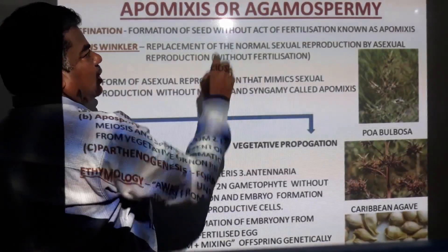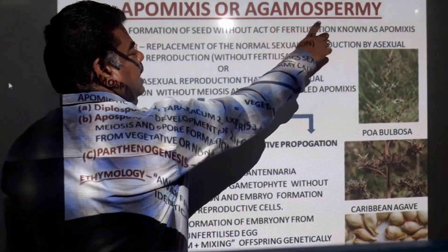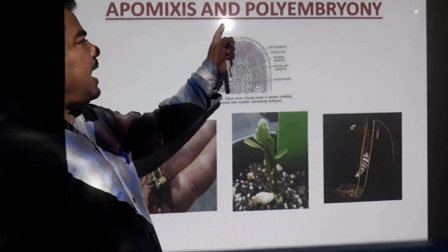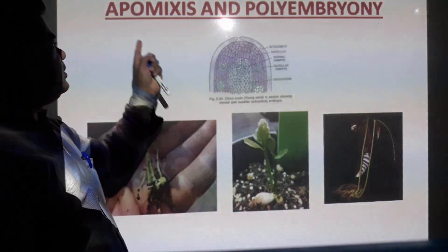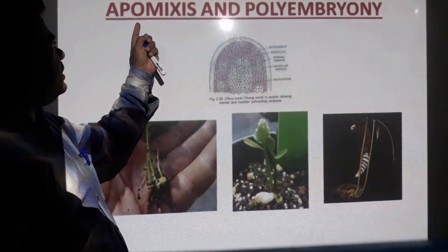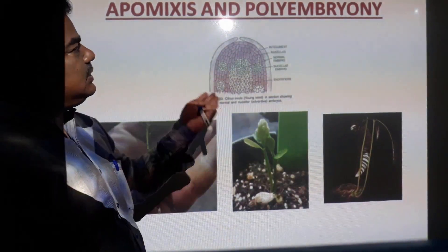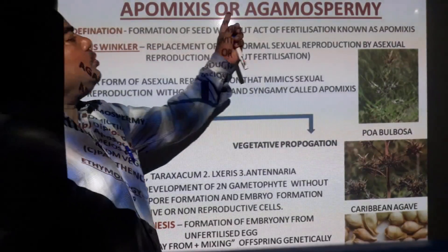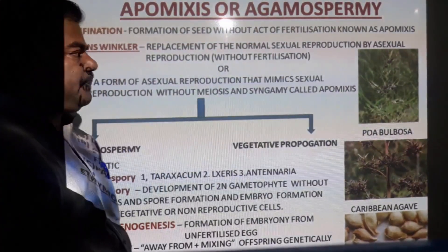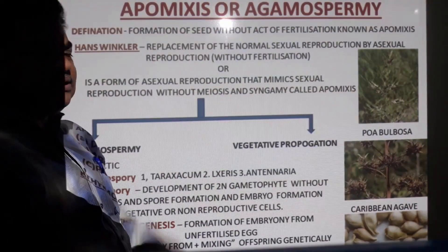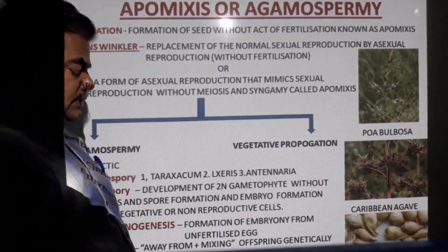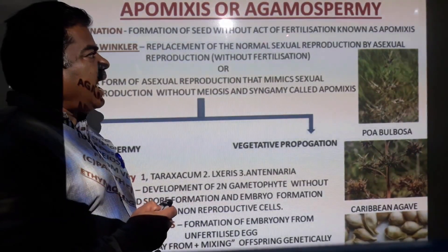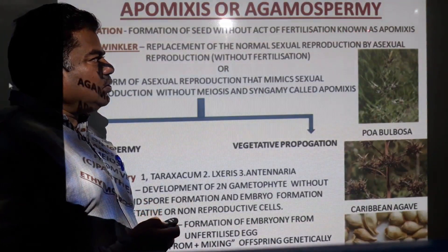Apomyxis, also known as Agamospermi, are the two topics we will cover. First we will see Apomyxis, then Polyembryony. Apomyxis is defined as the formation of seed without the act of fertilization.